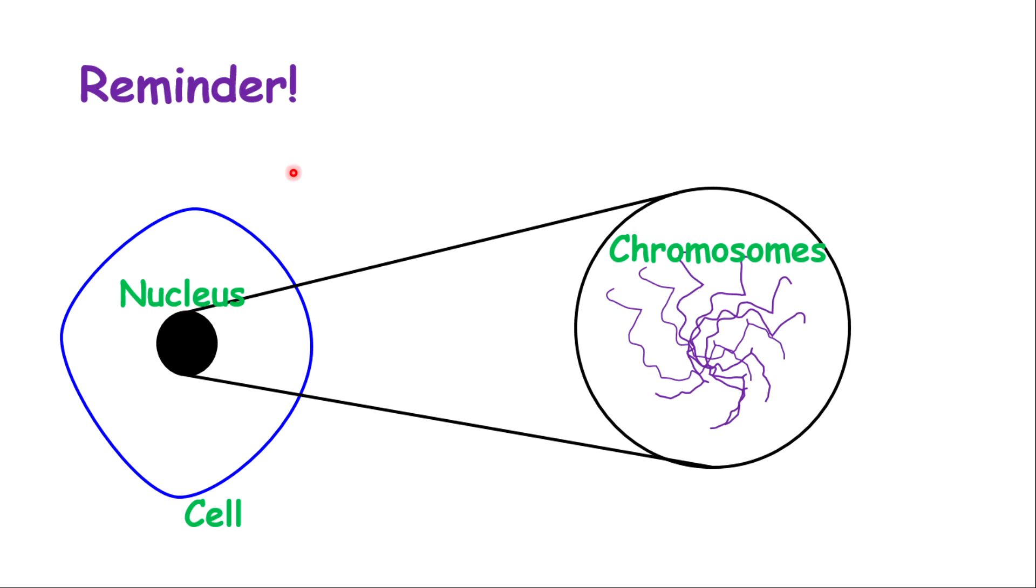As a reminder, cells have a nucleus and in the nucleus, you have some thread-like structures called chromosomes.